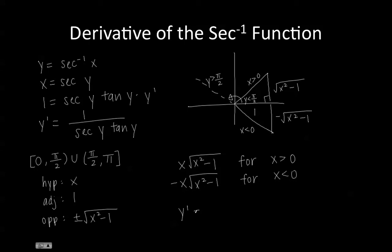In summary, we can just rewrite this as the derivative of y is equal to 1 over the absolute value of x times the square root of x squared minus 1. So that's the derivative of the inverse secant function.